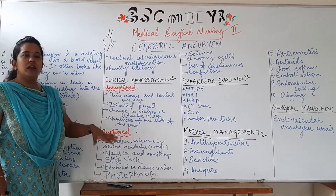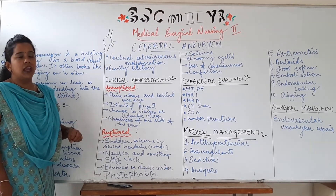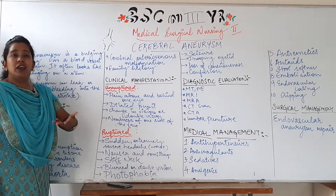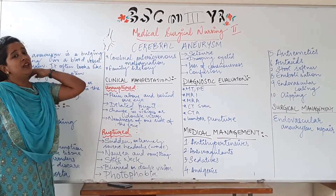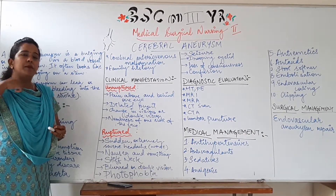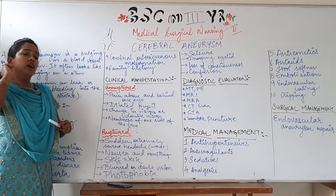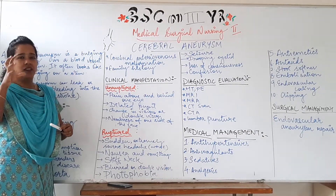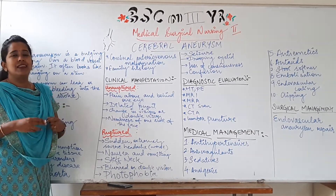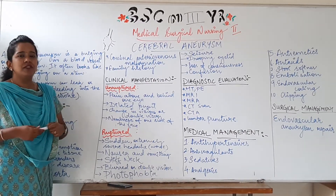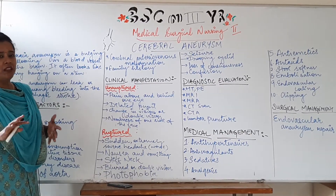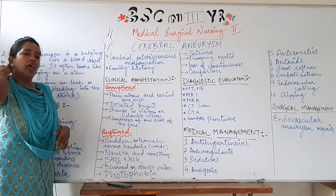Apart from this sudden extreme or worst type of headache, there could be nausea and vomiting due to hemorrhage. The neck could become stiff — because if blood starts leaking into the CSF, the spinal cord can get edematous, and due to that edema, the neck becomes stiff. Neck rigidity is very much experienced in patients with ruptured aneurysm.